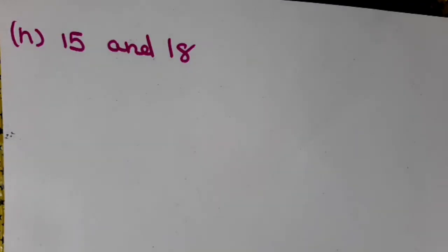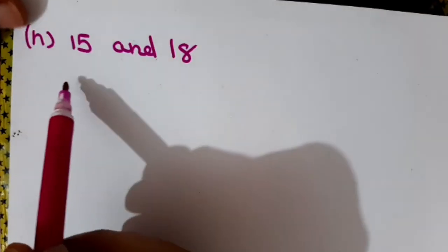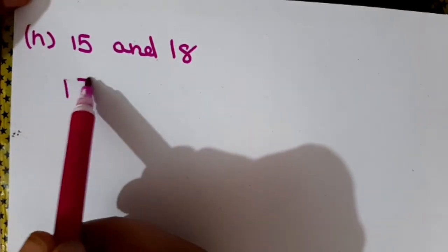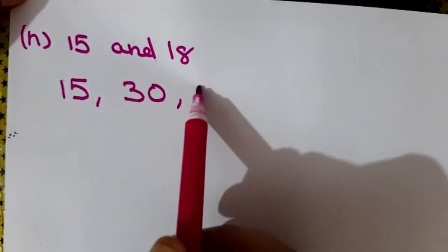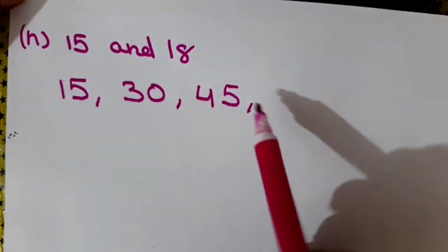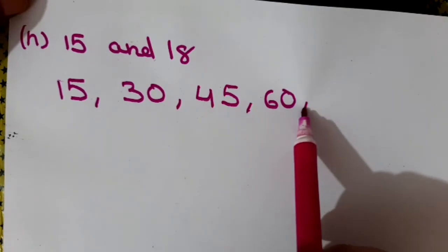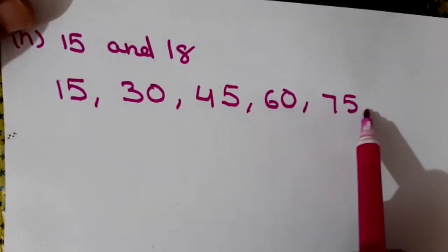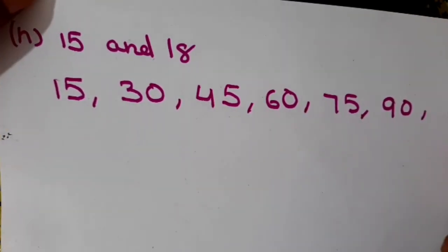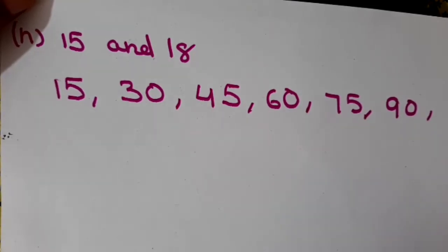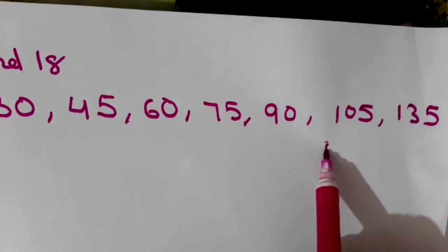Now I will do part H. I have to find the first ten multiples of 15 and 18, then find the common multiples and then the LCM. Multiples of 15 are: 15, 30, 45, 60, 75, 90, 105, 120, 135 and 150.